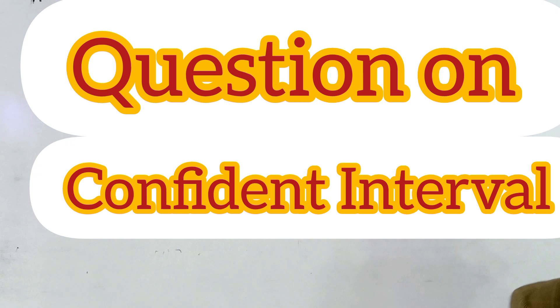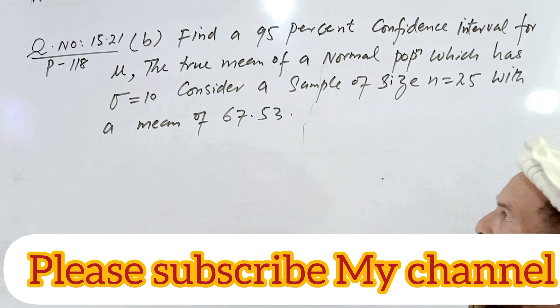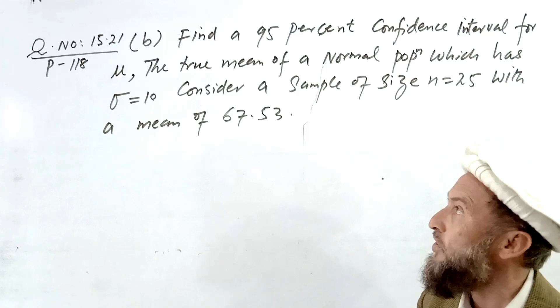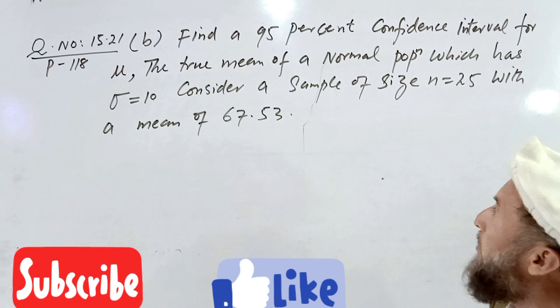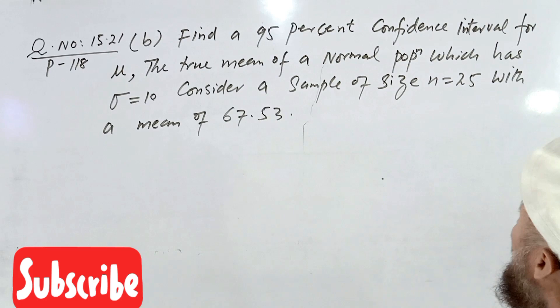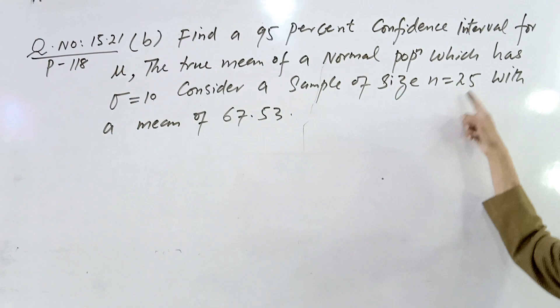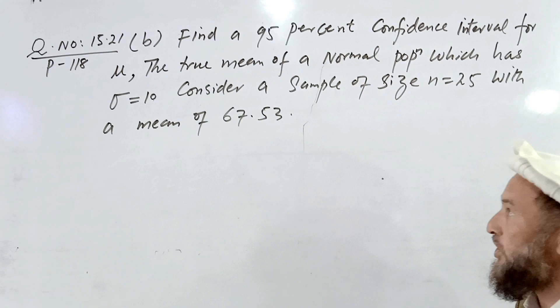Hello viewers, Assalamu Alaikum. Maqbool Islam is once again in front of you. Today we will discuss Exercise 15.2 Part B, page number 111: find a 95% confidence interval for the population mean — the true mean mu — of a normal population where sigma is known. Consider a sample of size n equal to 25, where the sample mean X-bar is equal to 67.53.